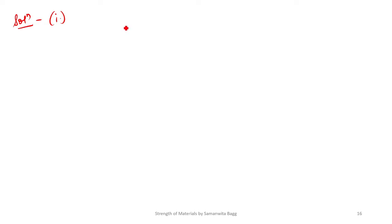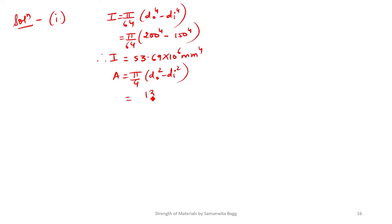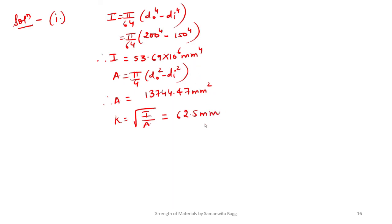Solving the first part: I = (π/64)(DO⁴ - DI⁴) = (π/64)(200⁴ - 150⁴) = 53.69 into 10⁶ mm⁴. Area = (π/4)(DO² - DI²) = 13744.47 mm². K = root of I/A = 62.5 mm.